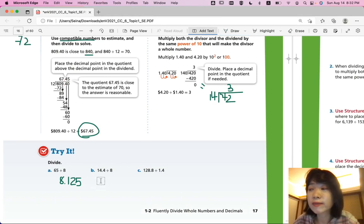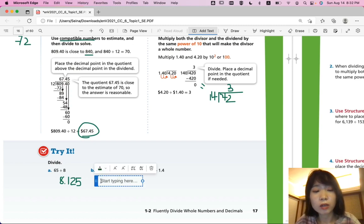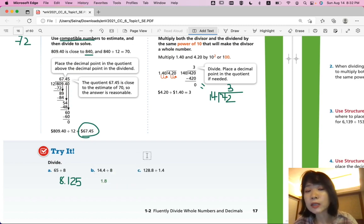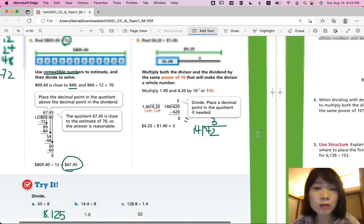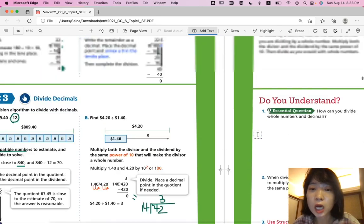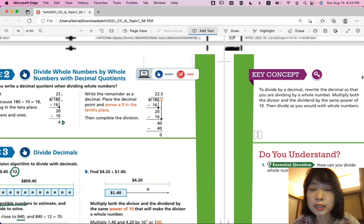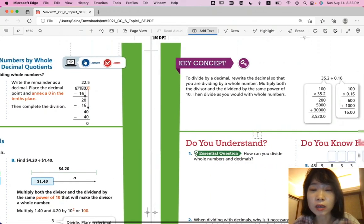What about part B? 14.4 divided by 8. You got 1.8. That is correct. Part C. 128.8 divided by 1.4. You should get an exact nice whole number of 92. Check your answers if you got all of them correct. Good job. Please continue practicing. Just in case you make a mistake. Practice is only good for you.